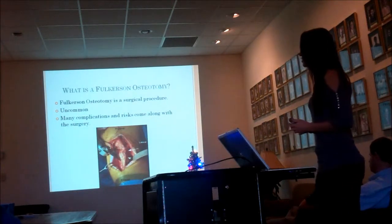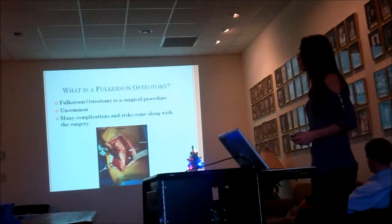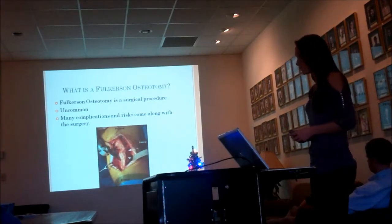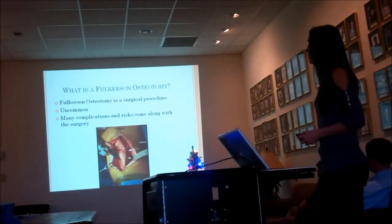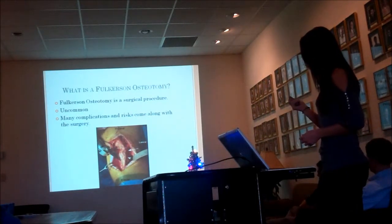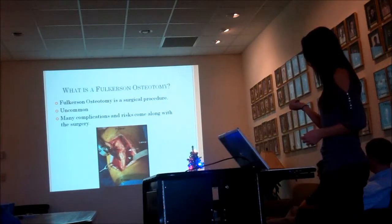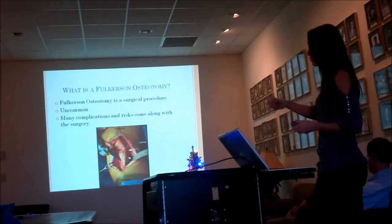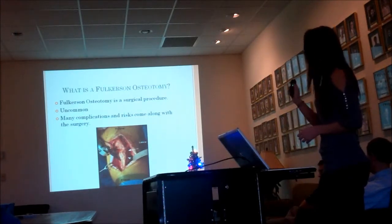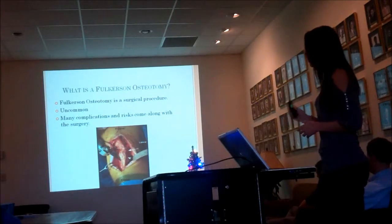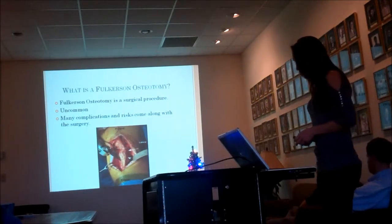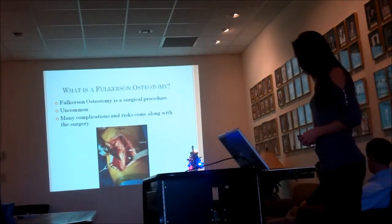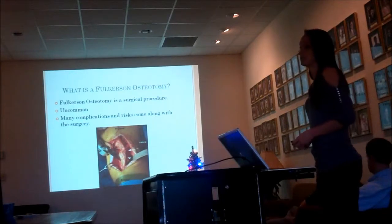A Fulkerson's Osteotomy is a surgical procedure that consists of moving the tibial tuberosity medially and anteriorly to correct the alignment of the patella. They cut the top of the tibial tuberosity, move it over, and screw it down, then attach the patella tendon back to align it. The goal is to allow the weight-bearing line to become as normal as possible to reduce stress on the compartments and ligamentous structures.